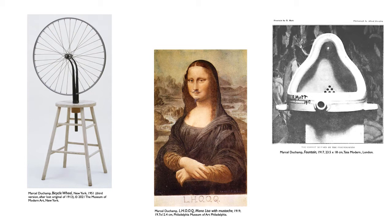Fountain is one of Marcel Duchamp's most popular works — he takes a urinal and claims it to be art. Same with The Bicycle Wheel and Da Vinci's Mona Lisa, where he appropriates the traditional renowned work, now with a mustache. Art is art if the artist says it is. These pieces showcase his ready-made ideals: mass-produced products taking the place of traditional art.